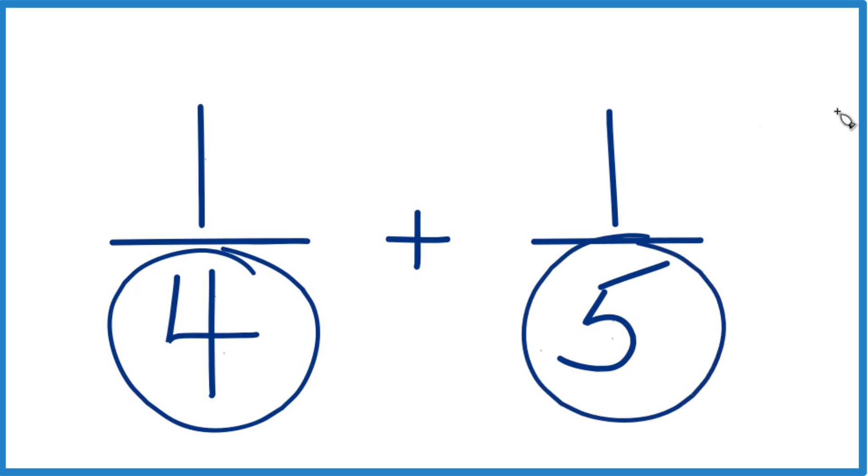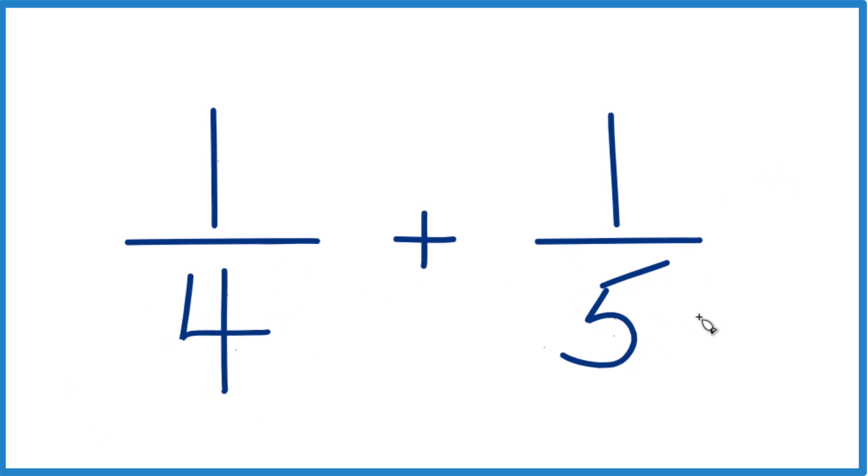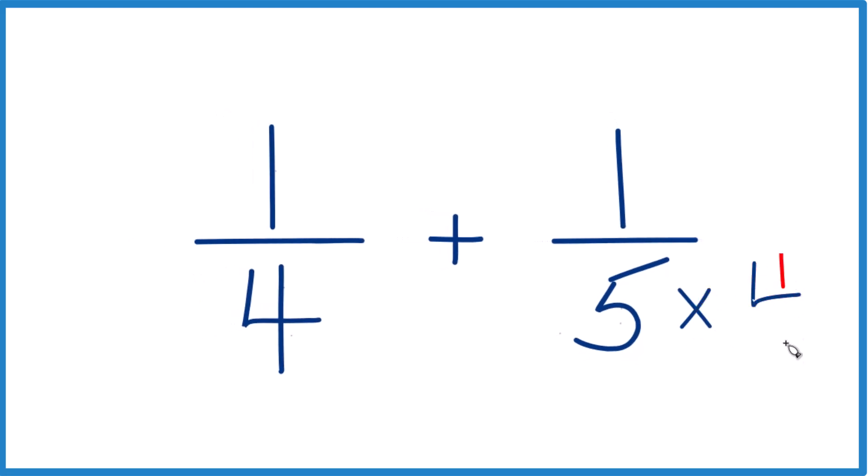If these were the same, we could just add the numerators and we'd be done. The way to do it is, let's take 4 times 5. So 4 times 5 would give us 20. And over here, 5 times 4, that would give us 20.